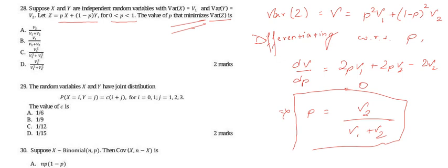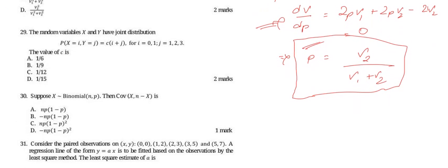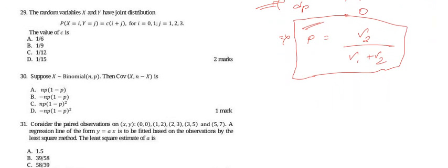This can be confirmed as a minimum by differentiating the equation twice. Checking the options, option A matches our answer. Hence the answer to question 28 is option A. Now let's move on to question number 29.